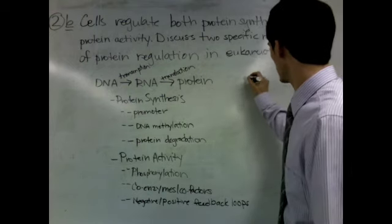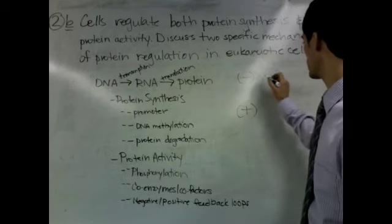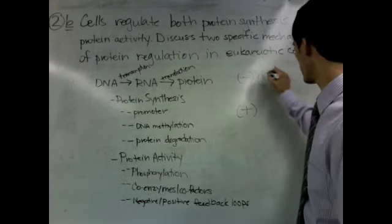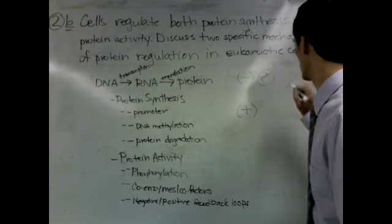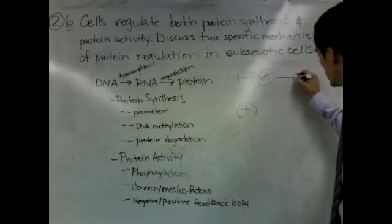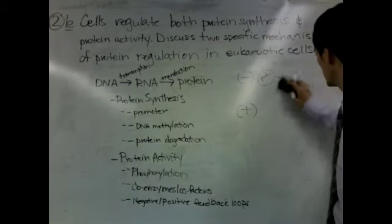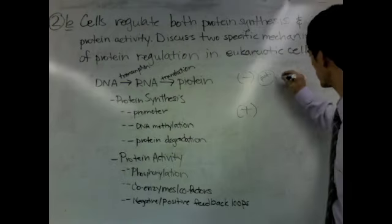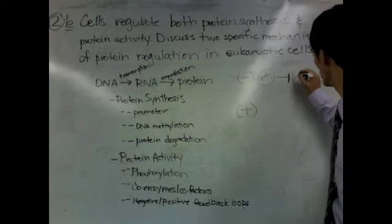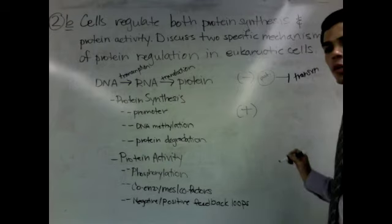The last I'm going to talk about is negative and positive feedback loops. In negative feedback loops, what happens is that a protein will be made and it serves to prevent the further transcription of other proteins.